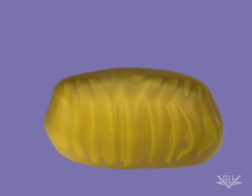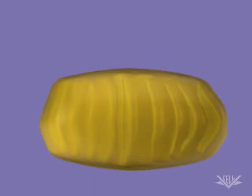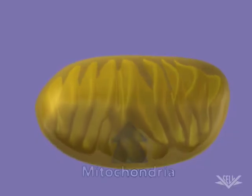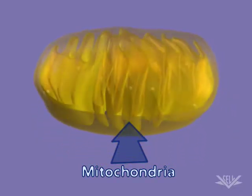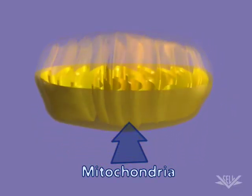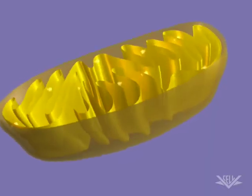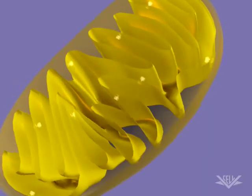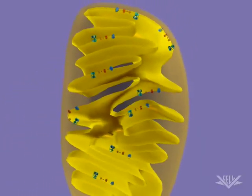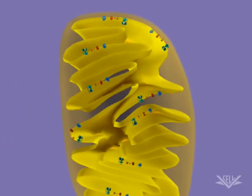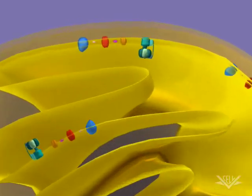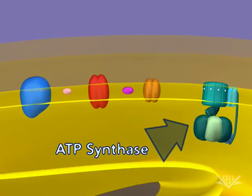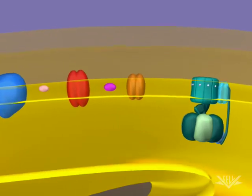Gradients and the potential energy they create are key aspects of the biological world. A good example of the use of a gradient occurs in the mitochondria when ATP is synthesized. ATP is synthesized by ATP synthase, a large complex of membrane-bound protein. Here we see ATP synthase, along with other membrane-bound proteins.